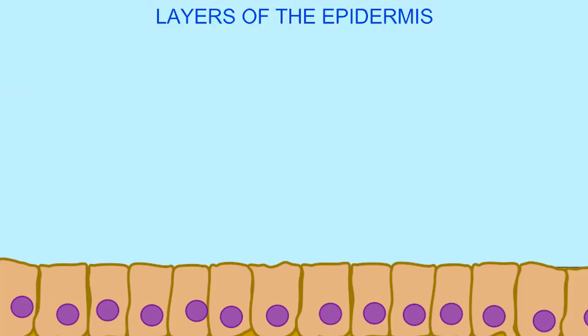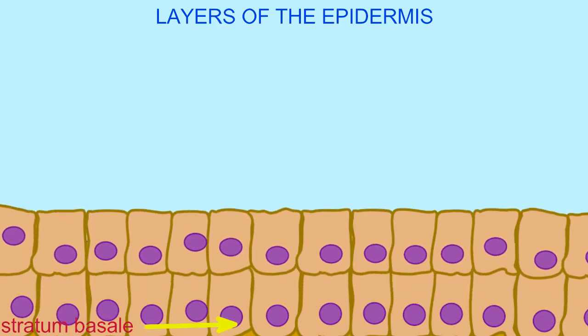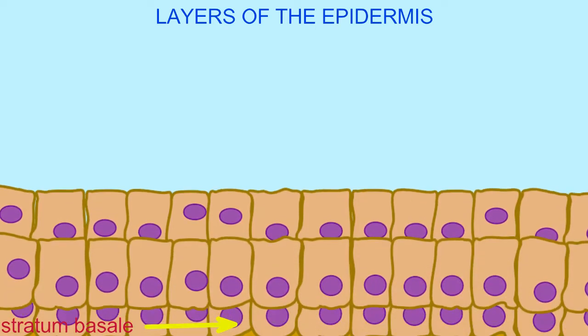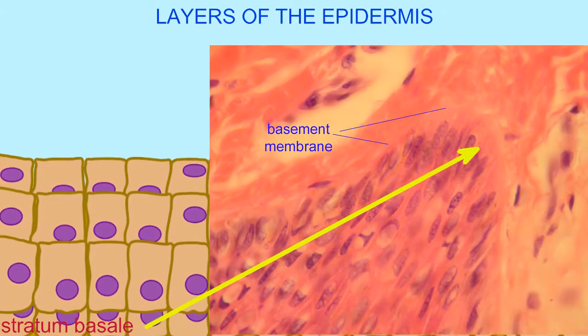The epidermis can be divided into a number of sub-layers, beginning with the stratum basale, the basal layer where epithelial cells are undergoing high levels of mitosis, and melanocytes are producing pigment.